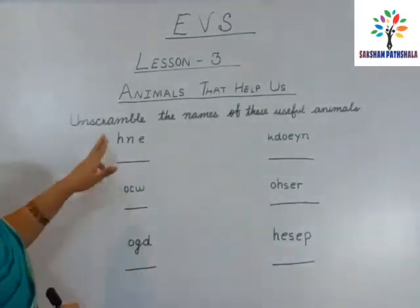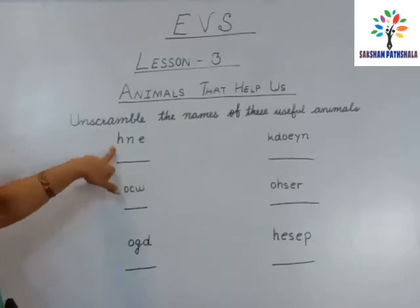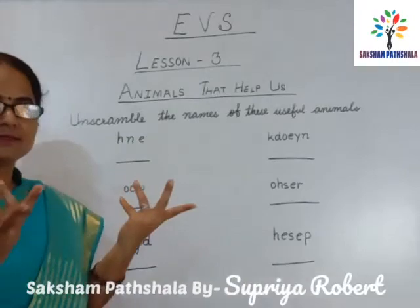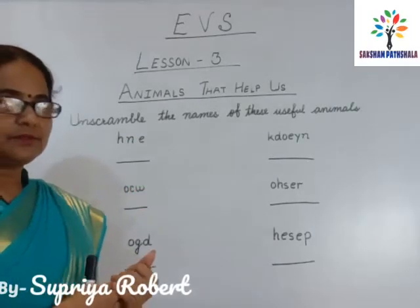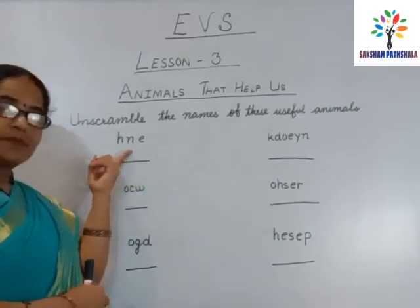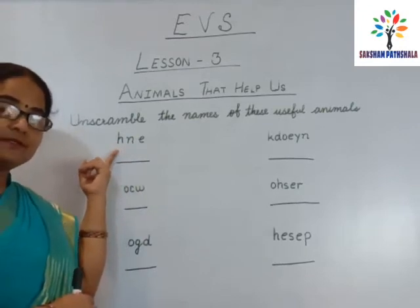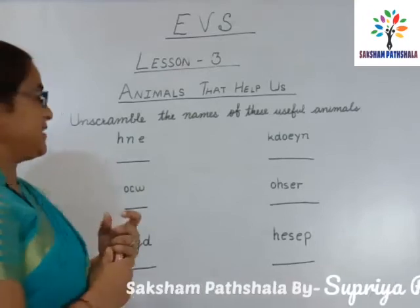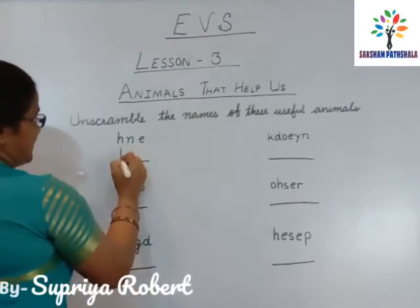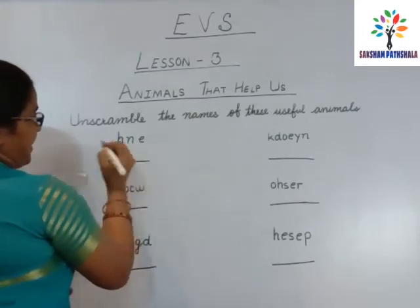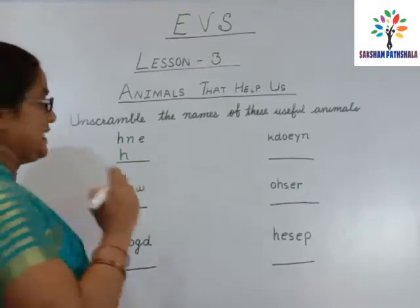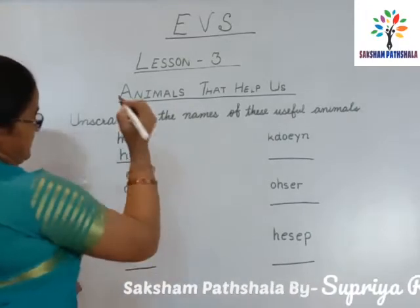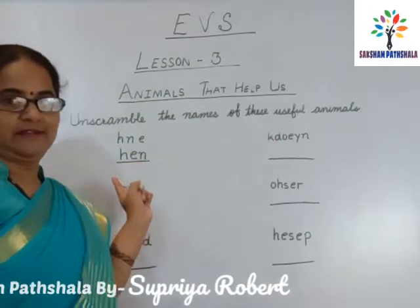Now, see here. What is written here? H and E. We will write first H, then E, then N. Hen. Good.